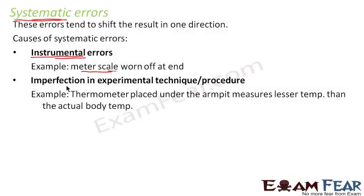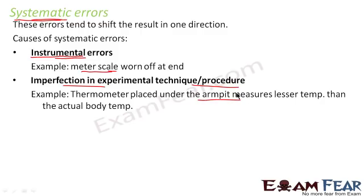There is another category: imperfection in experimental technique or procedure. If there is a defect in the way you are measuring a physical quantity, that can give rise to a systematic error. For example, a thermometer placed under the armpit measures a lesser temperature than the actual body temperature. If you place the thermometer under the armpit, the result will always be lesser than the actual value — so this is also a systematic error.